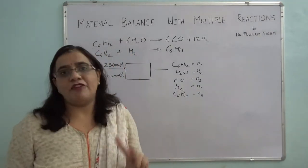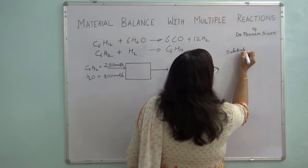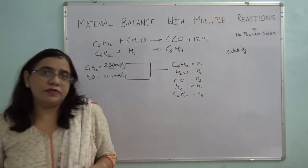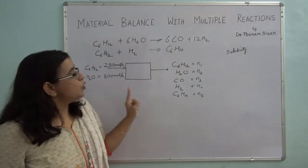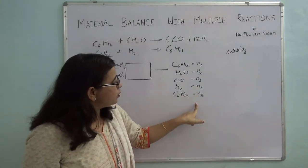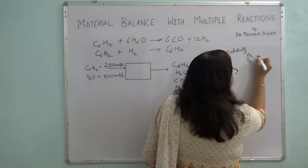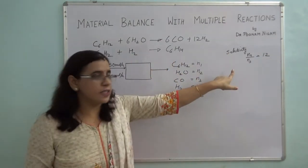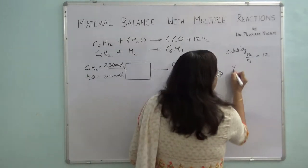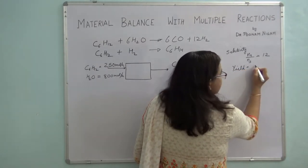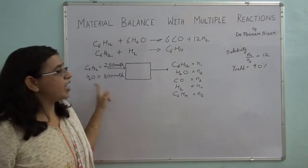Apart from the inlet flows, two more things are given as process specifications. One is that the selectivity of hydrogen is given as 12 — that is, hydrogen to C6H14 equals 12. In our notation, this is: N4 divided by N5 equals 12. The second specification is that the yield of hydrogen is 40%.